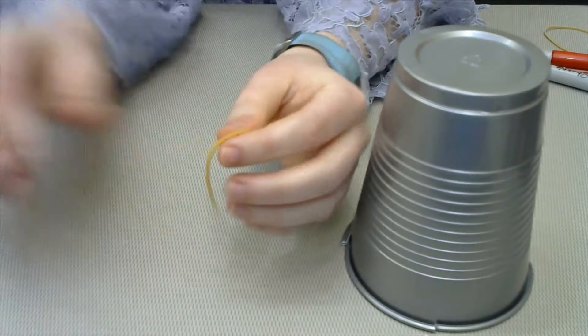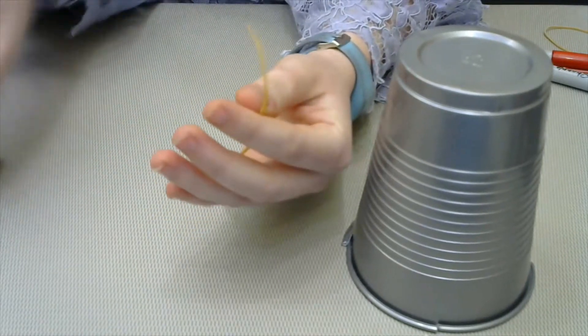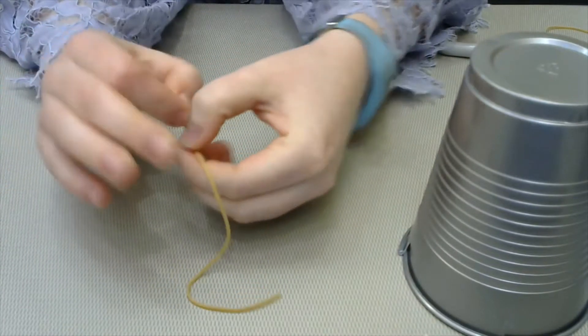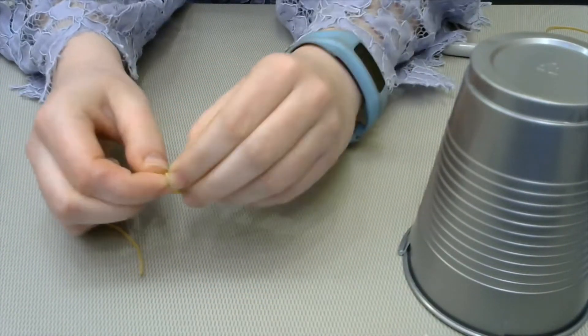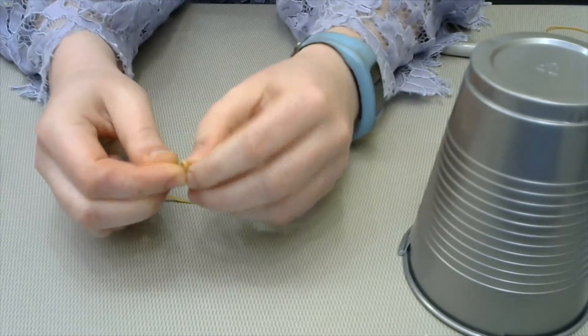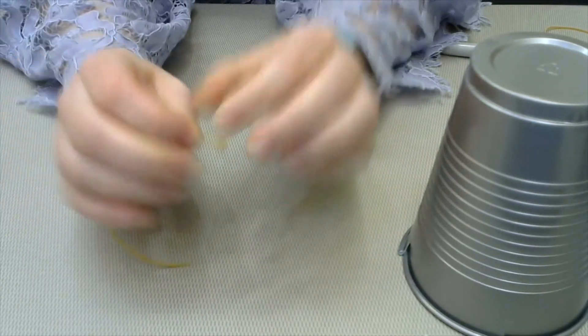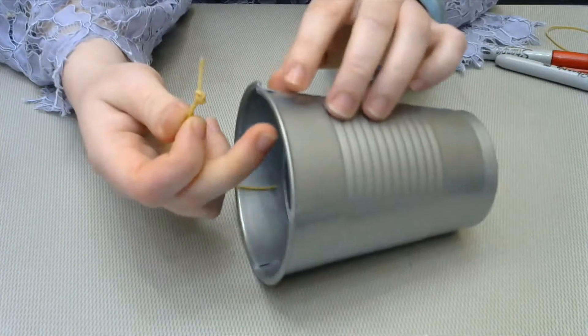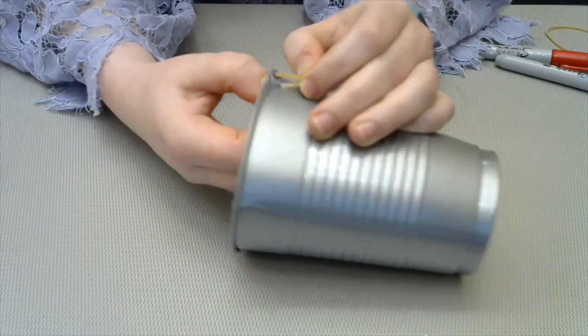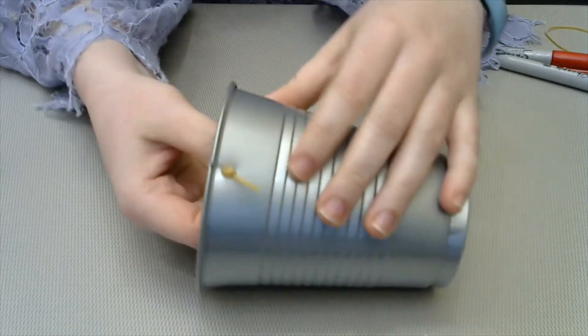So when you have your cuts done, you're going to take one rubber band and you're actually going to cut it too. So now you have a nice elastic strand and you're going to tie a knot at one end. I'm going to tie it twice just to make sure the knot is big enough. Just like so, and making sure that your knot is on the outside of the cup, you're going to slip the rubber band into one of your slits. Just like that.